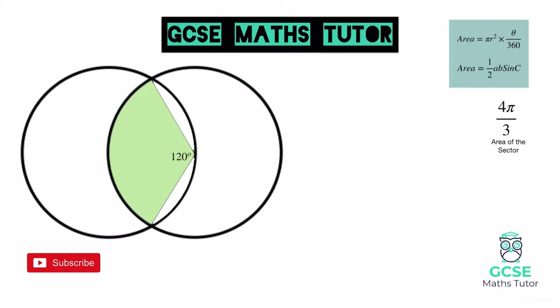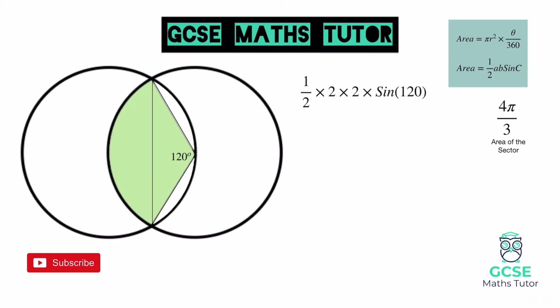Next we need the area of the triangle. Once we have that, we can work out the area of the segment. The triangle has two lengths of 2, and we use the formula one half times a times b times sine c. Putting the numbers in: half times 2 times 2 times sine 120. A half times 2 times 2 simplifies to 2, so we have 2 times sine 120. To do this without a calculator, you need to know that sine 120 is supplementary with sine 60, so they have the same value. The exact value of sine 60 is root 3 over 2.